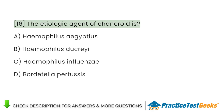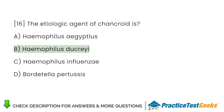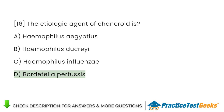The etiologic agent of Chancroid is: A. Haemophilus egyptus. B. Haemophilus ducreyi. C. Haemophilus influenzae. D. Bordetella pertussis.